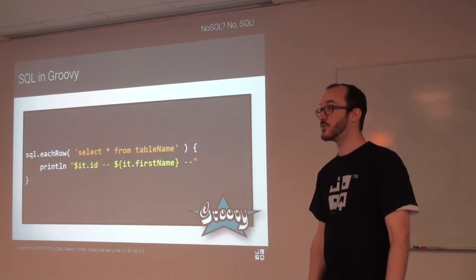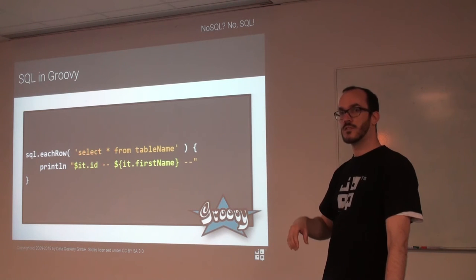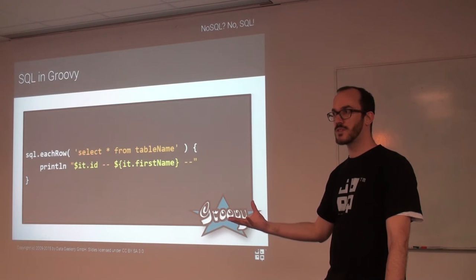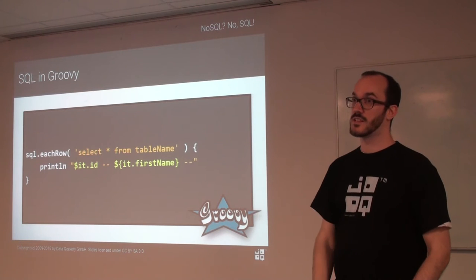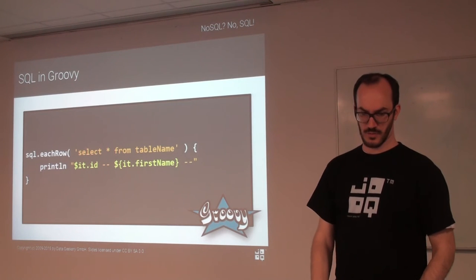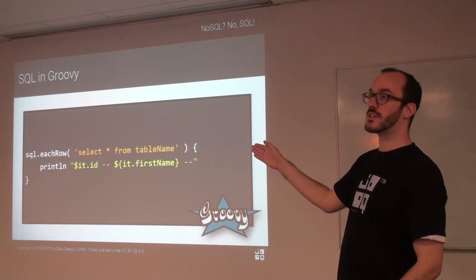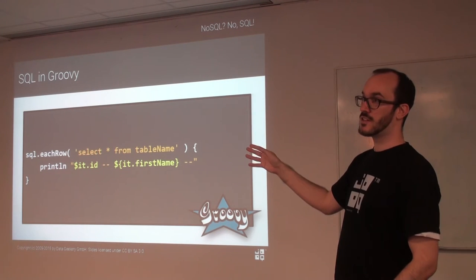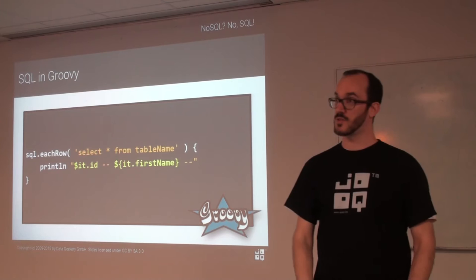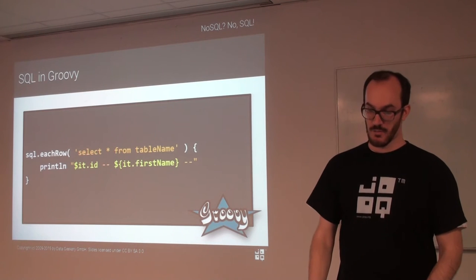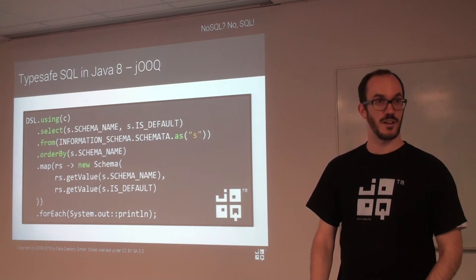When you're doing Groovy, you can write SQL statements like this — it's really awesome. You have the SQL object, you call each row, it executes the SQL statement, takes the parameter, and there's a second implicit parameter — a Groovy lambda expression, short syntax form — that takes the result set, iterates over each result. And you can use string interpolation to dereference columns within a string from your result set. You can't get any more concise with SQL than with Groovy. But there's no type safety. If type safety is not important, this might be fine; if type safety is important, we have jOOQ.